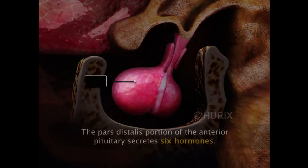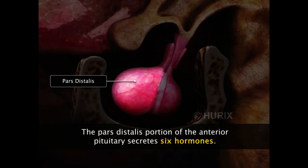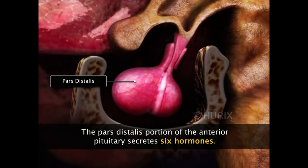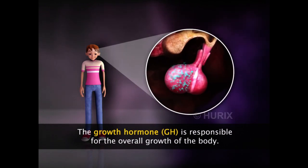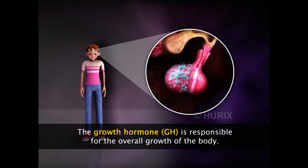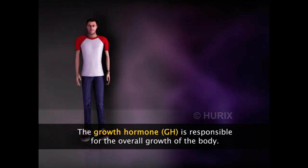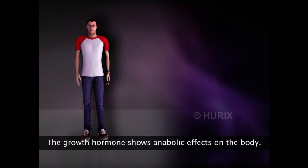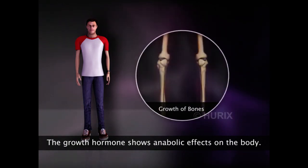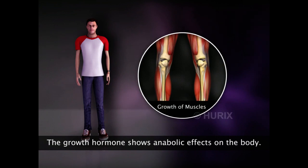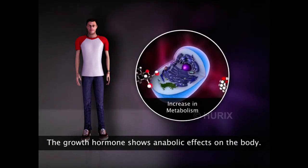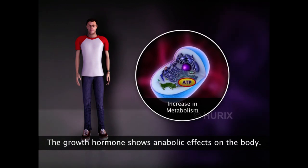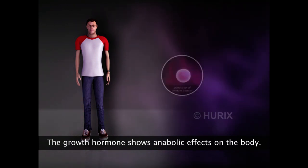The pars distalis portion of the anterior pituitary secretes six hormones. The growth hormone GH, secreted from the pars distalis of the anterior pituitary, is responsible for the overall growth of the body in growing children. The most peculiar effect of growth hormone is an increase in height. It is an anabolic hormone that stimulates the growth of bones and muscles, increases the metabolism of carbohydrates, proteins and fats, and also stimulates the body's immune system.